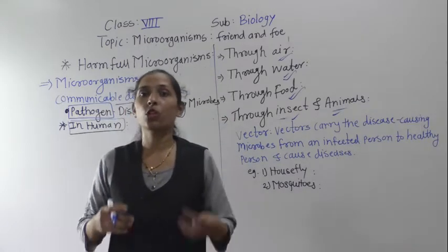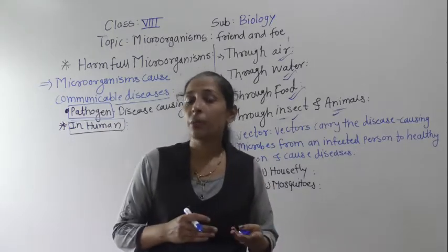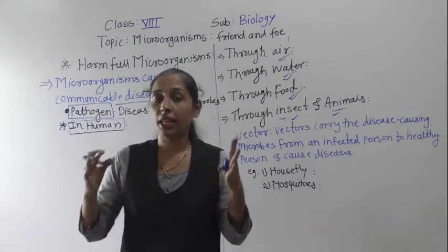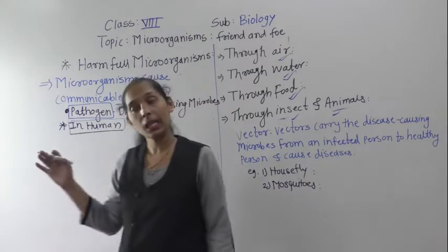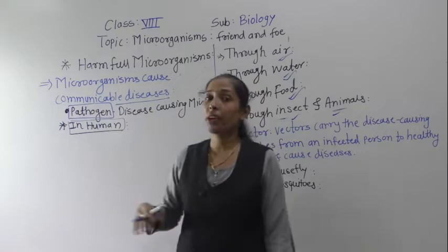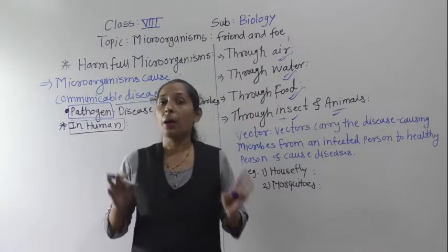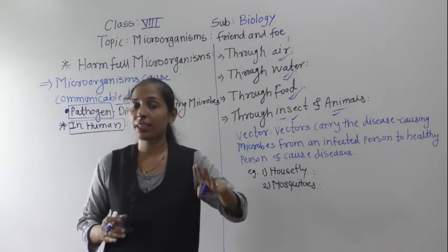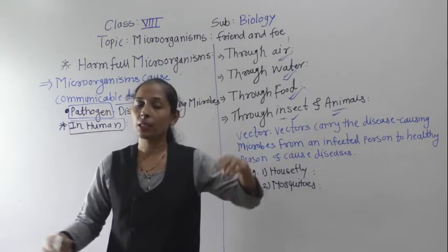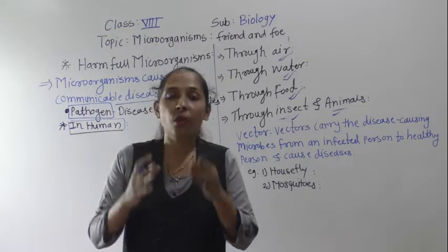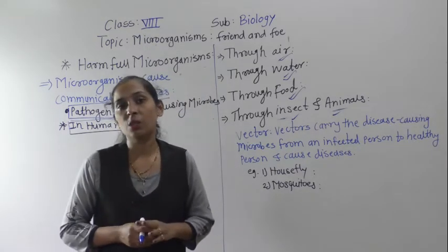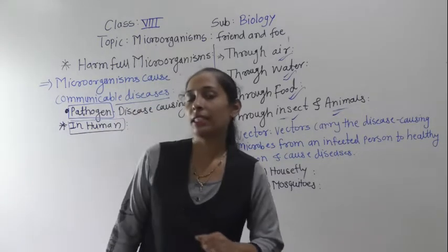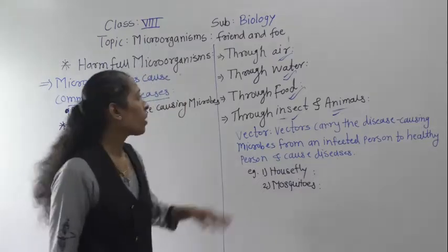There are many different types of communicable diseases — for example, chickenpox, common cold, cholera, and typhoid. These are all examples of communicable diseases that can spread from one person to another. Let us see the different ways in which these diseases spread from an infected person to a healthy person.